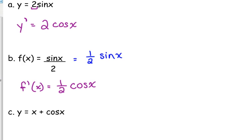So, if our function is y is equal to x plus the cosine of x, well, let's just take the derivative of both those pieces. The derivative of x is 1. The derivative of the cosine of x is negative sine of x. So, it is 1 minus the sine of x as its derivative.